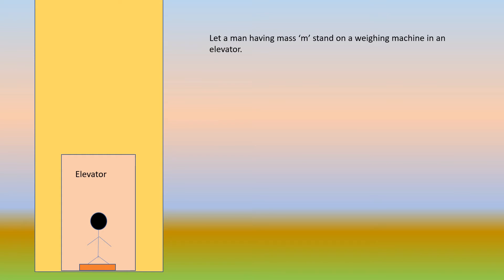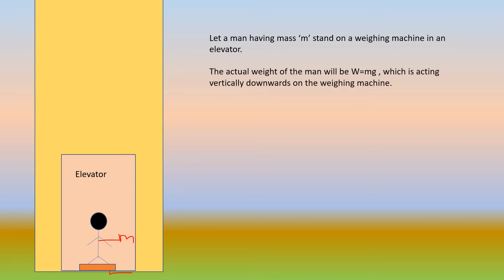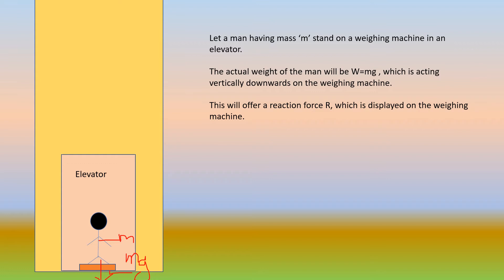Now let us see an example of a man having mass M standing on a weighing machine in an elevator. The man has a mass M and is standing on the weighing scale in an elevator. The actual weight of the man will be Mg, acting vertically downwards. The weighing scale will offer a reaction force R, which is displayed on the weighing machine. Whatever weight is displayed, that reaction force R is the apparent weight of the man.